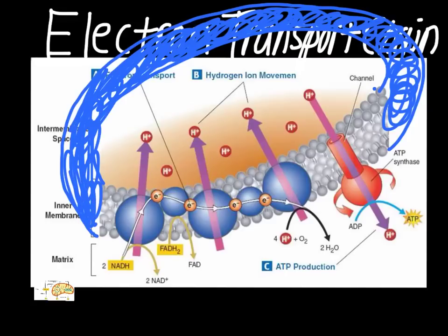There are two things we have to talk about first. The first one is NADH. The NADH is coming from the Krebs cycle — it's one of the products of Krebs. NADH is an electron carrier, so what it does is drop off the electron at the electron transport chain. As NADH drops that off, it gives up its hydrogen. Remember, these electrons are like glue — the electron is what was holding the hydrogen onto NADH. Once that's given up and we're back to NAD+, that electron is released and starts moving down ETC.